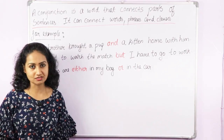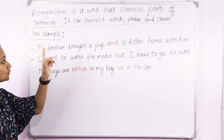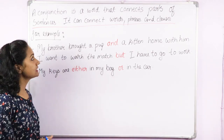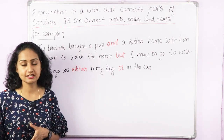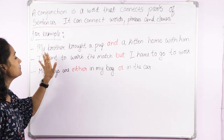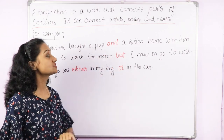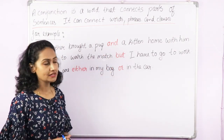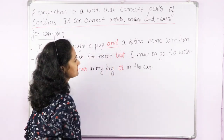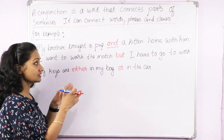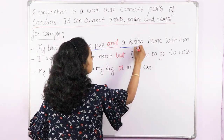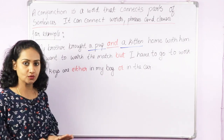What is a conjunction? A conjunction is a word that connects parts of sentences. It can connect words, phrases, or clauses. For example: 'My brother brought a pup and a kitten home with him.' So here the conjunction is 'and,' and in this sentence it is connecting two words — a pup and a kitten.